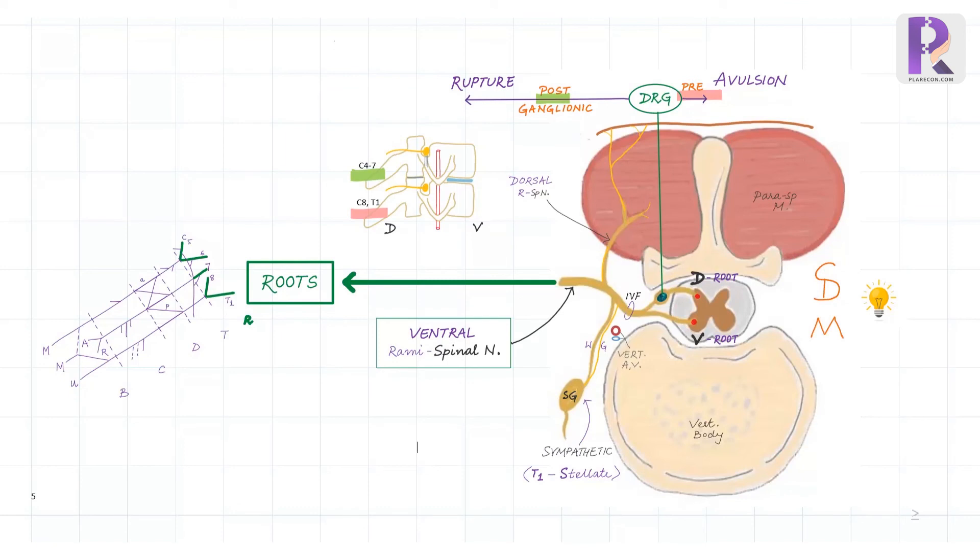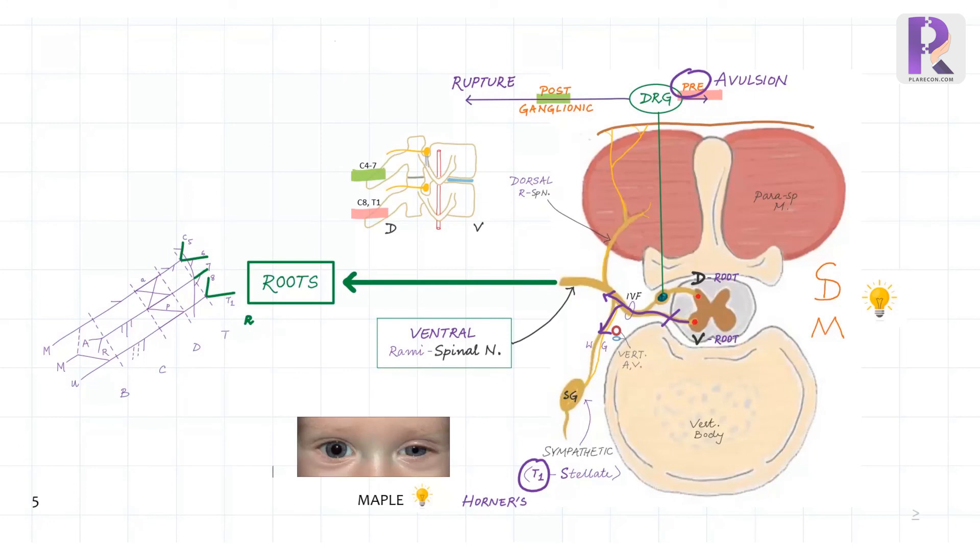In pre-ganglionic injuries due to injury to the ventral root of the spinal nerve, the motor signals to the respective myotomes is interrupted. Also, when T1 root is involved, the sympathetic supply to the stellate ganglion is interrupted and hence, Horner's syndrome develops. However, since the peripheral sensory fibers continue to relay to their cell bodies in the dorsal root ganglion, the sensorineural action potential on nerve conduction studies continue to be normal. But since the signals fail to reach the brain, the sensations are not perceived.